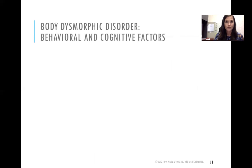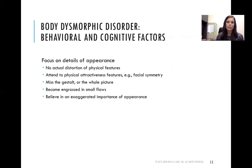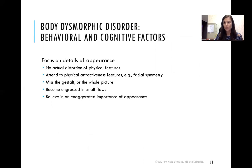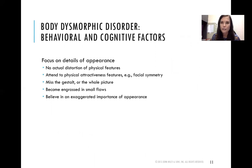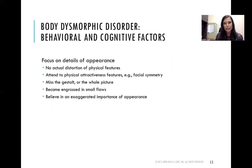The behavioral and cognitive factors of body dysmorphic disorder include a focus on details of appearance. There's no actual distortion of physical features — this is not someone with an actual disability. They attend to specific aspects of physical attractiveness, such as facial symmetry, and miss the gestalt, or the whole picture. They're so focused on one detail — like being not totally symmetrical — that they can't look at the whole picture and accept themselves. They become engrossed in small flaws and believe in an exaggerated importance of appearance.